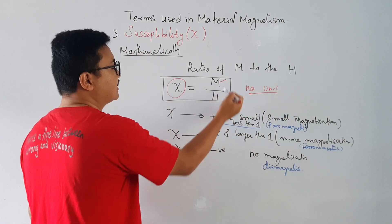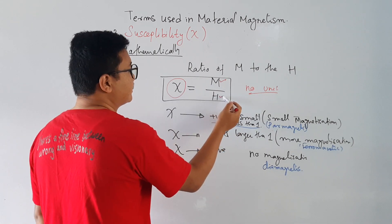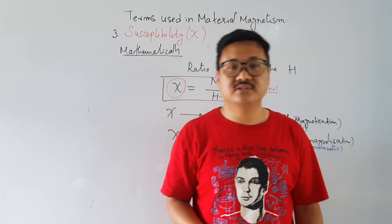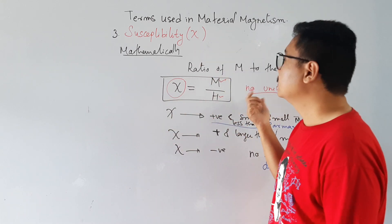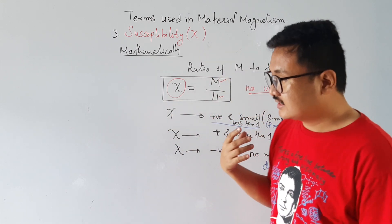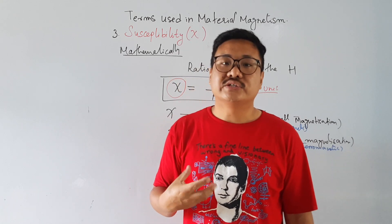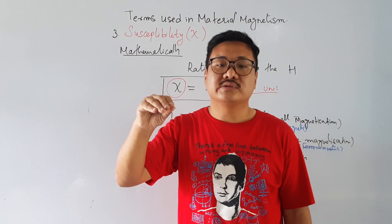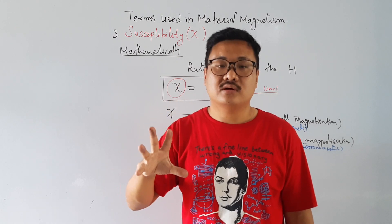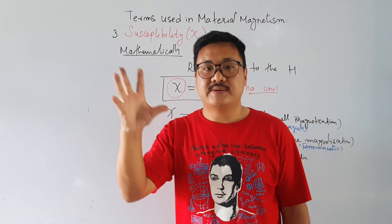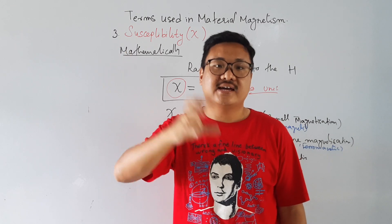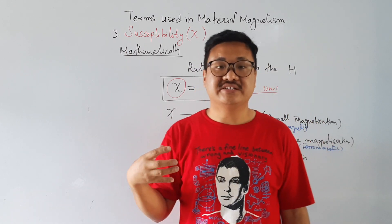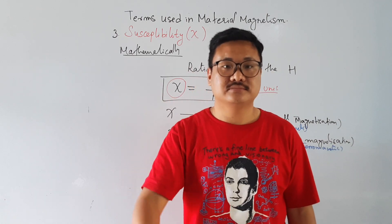Chi has no unit because both M and H are magnetic field quantities, so the units cancel out naturally. In the next lecture, we are going to study the three types of magnetic materials — paramagnetic material, diamagnetic material, and ferromagnetic material — in detail. Thank you.